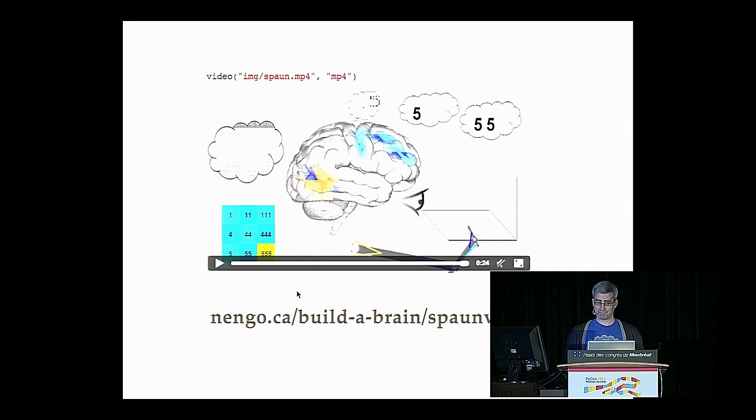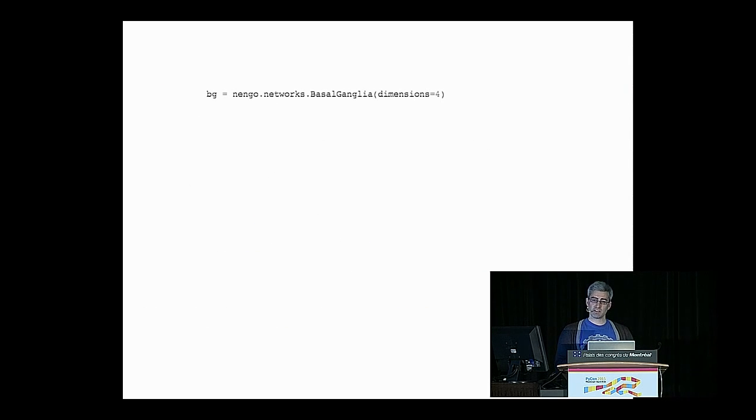But what I want to highlight here by showing Spaun is that Nengo allows us to scale things up in an exciting way. One of the ways in particular that we enable this type of scaling is with this new version of Nengo that we just released. It took a lot of weeks of research and kind of tweaking to get Spaun to work. One of the components that was quite difficult is called the basal ganglia, and it essentially does action selection in Spaun. But now with this new version of Nengo, anyone can install pip install Nengo and get the same basal ganglia in their models that we have in Spaun in just one line of code.